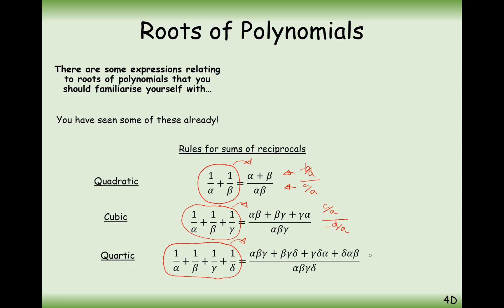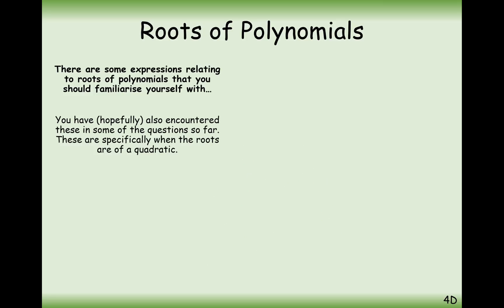And for the quartic case, it's going to be the sum of the triples — that's minus D over A — divided by the quad one, which is E over A. So there's not one constant formula to work out the sum of the reciprocals in each of the different quadratic, cubic and quartic forms. You just have to rely on the fact that you add the roots together, and then there will be a formula to summarise the numerator and the denominator.